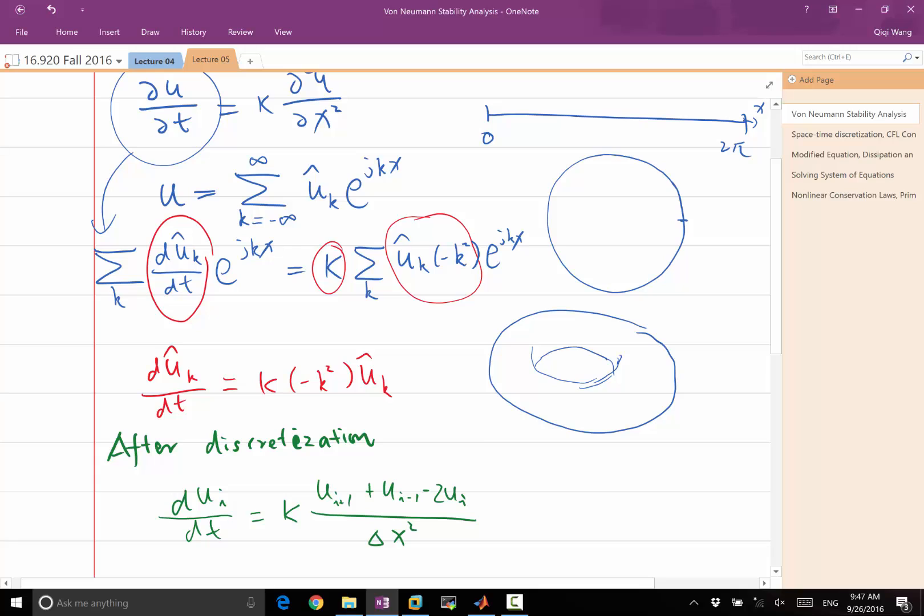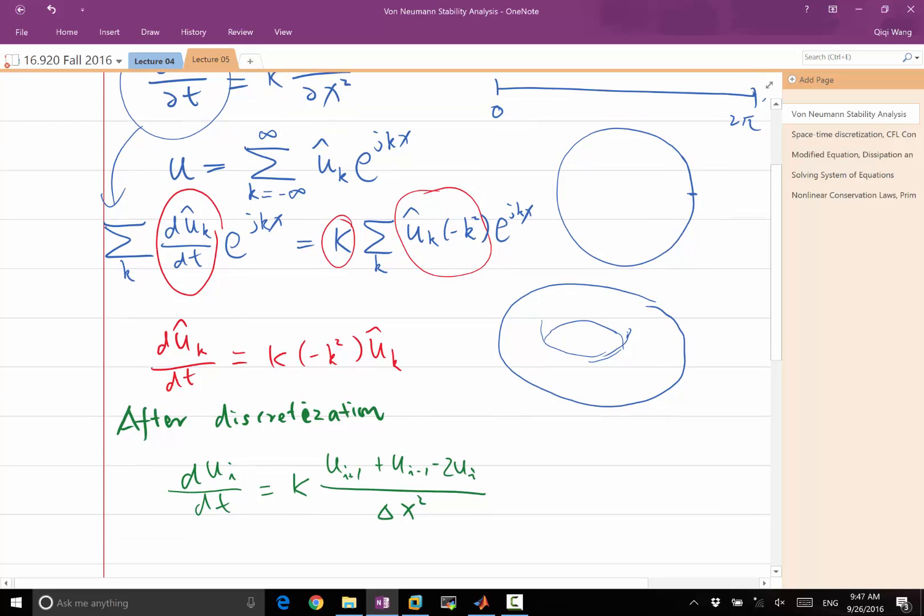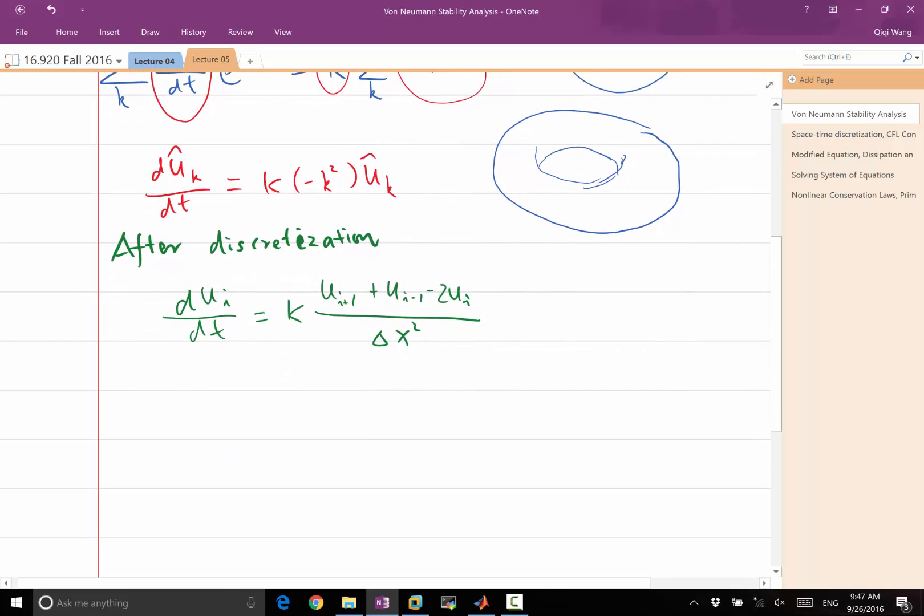We can also apply the Fourier series on the discrete solution. Here, we remember that u of i is defined as the numerical solution at u times i delta x, right?